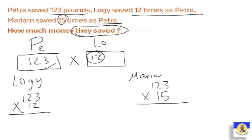We need to find Loji's amount and Maryam's amount, and we already know Petra's. After finding both answers, we'll add them all together. For Loji — 123 by 12: 2×3=6; 2×2=4; 2×1=2. Then put 0; 1×3=3; 1×2=2; 1×1=1. Then plus: 6, 4 plus 3=7, 2 plus 2=4, and 1. So Loji has 1,476.